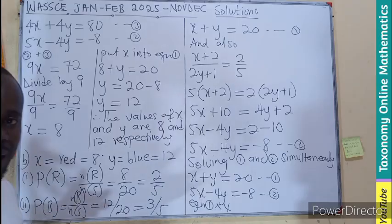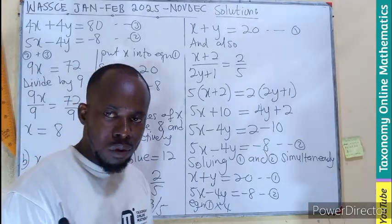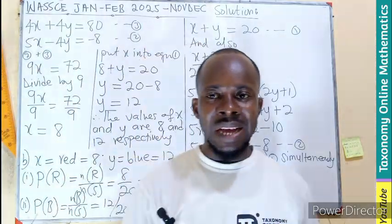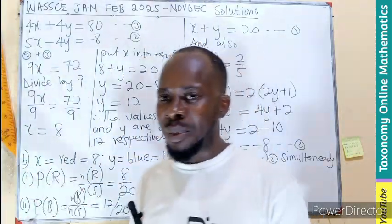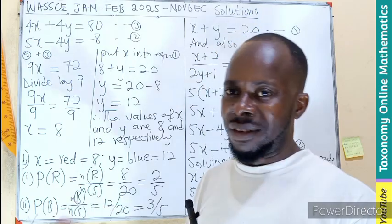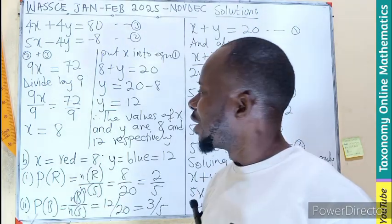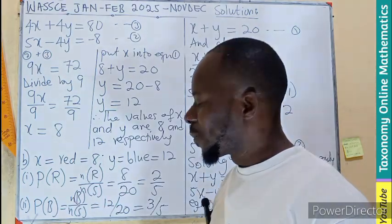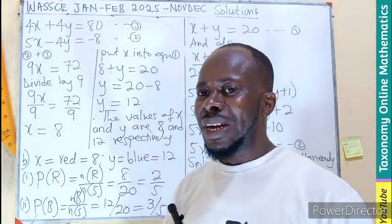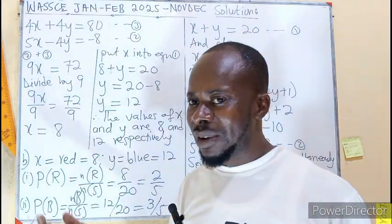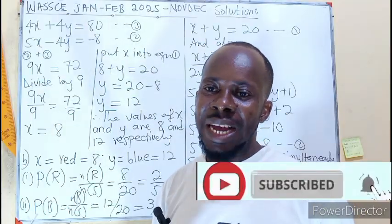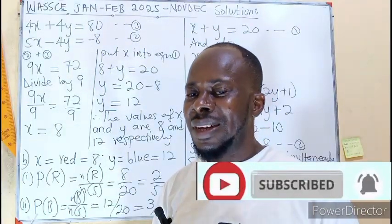I guess we are good to go knowing the value of X and Y, and finding the probabilities of the two colors, blue and red. Don't forget to leave a comment. Feel free to ask questions for clarification. Share with somebody and let's keep on learning together.